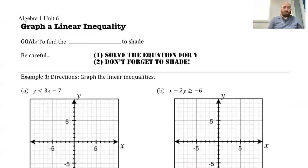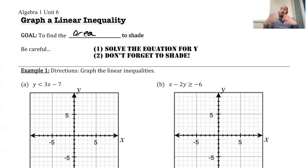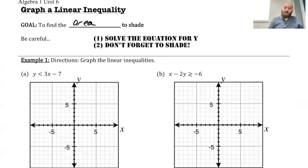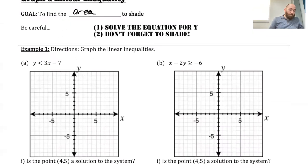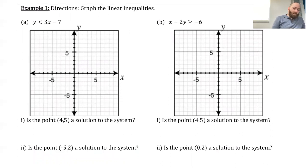So our goal is to find the area to shade — that's what represents our solutions. Before, we did a number line and represented all possible numbers in one direction as our solutions. Now it's a shaded region under this slanted line. Don't forget from unit 4: make sure the equation is solved for y, and then we also have to make sure we shade. So for part A, y is less than 3x minus 7. I'm going to start with graphing at the point (0, negative 7), and my slope is 3 over 1.